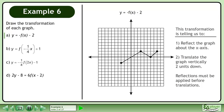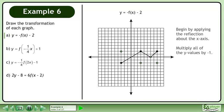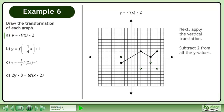Reflections must be applied before translations. Begin by applying the reflection about the x-axis — multiply all of the y-values by negative 1. Next, apply the vertical translation — subtract 2 from all the y-values.